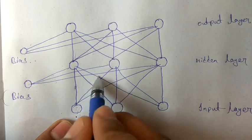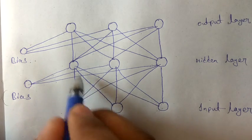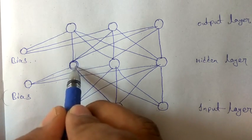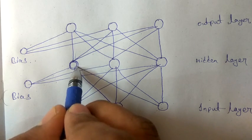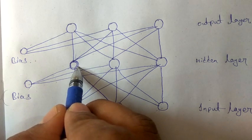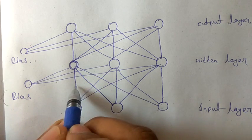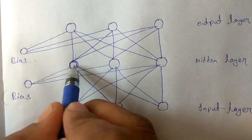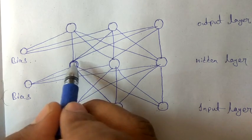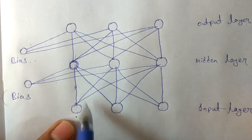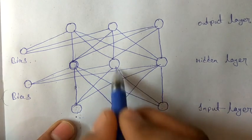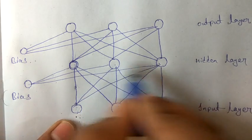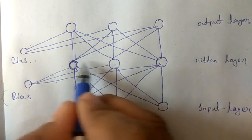The inputs from these three links are multiplied with the weights and then added with the bias. The output of this particular single hidden neuron is calculated by multiplying input and weight, then adding the bias, and then applying the activation function to get the output.